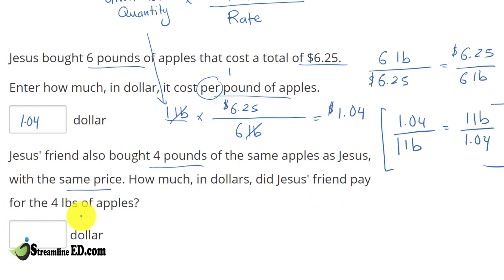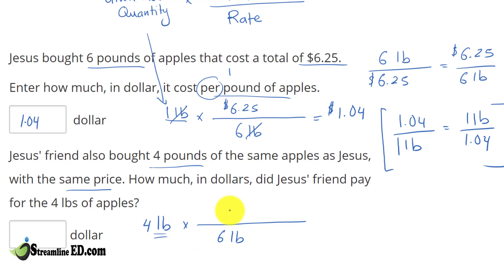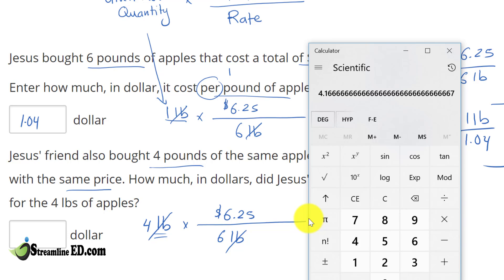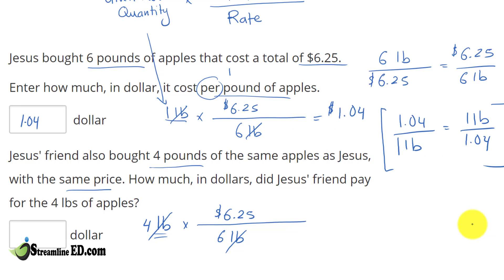Let me prove to you that both rates give you the same answer. With the first rate: we have 4 pounds of apples, and since the unit is pounds, we multiply by the ratio with pounds on the bottom — 6 pounds of apple — and $6.25 on top. The pounds cancel out. Using the calculator: 4 times 6.25 divided by 6 gives us $4.16, which rounds up to $4.17.